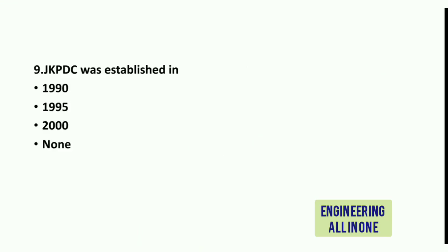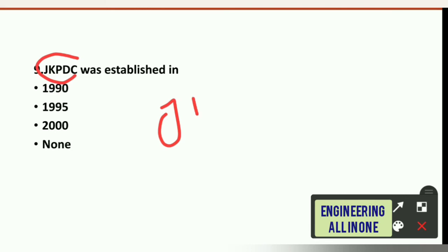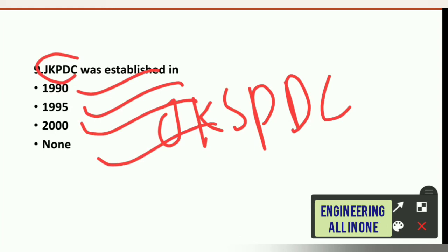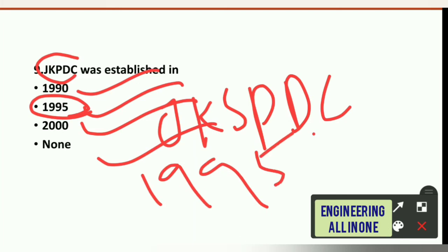Question 9: J&K SPDC — Jammu Kashmir State Power Development Corporation — was established in which year? Options are: 1990, 1995, 2000, or none. The right option is 1995. These were the nine MCQs related to power projects in J&K. If you found this helpful, please subscribe to the channel. Thank you, stay blessed.